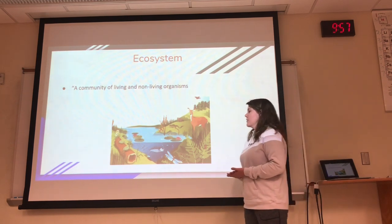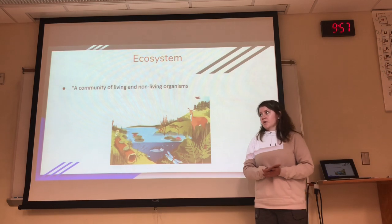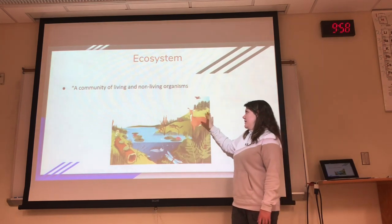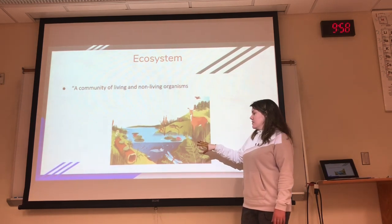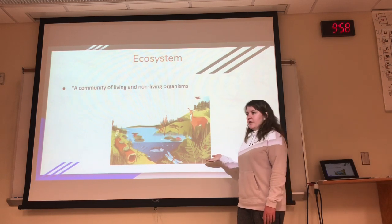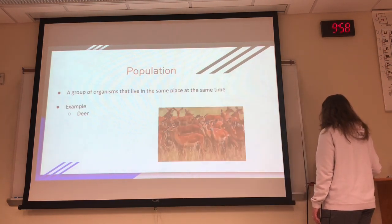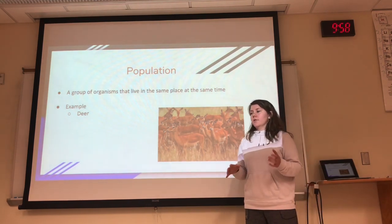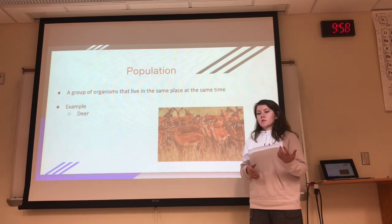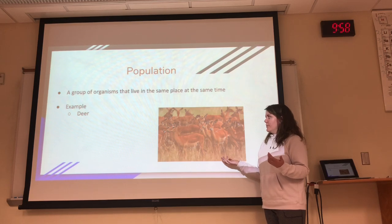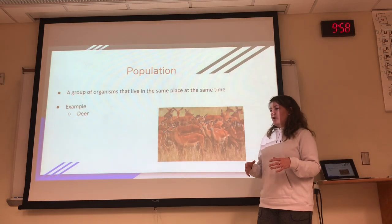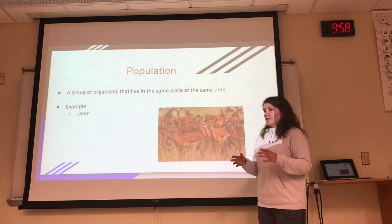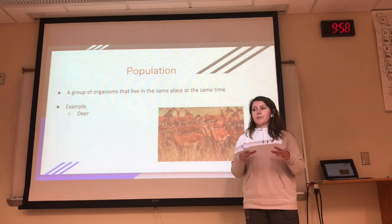An ecosystem is where living and non-living organisms exist together — for example, water, a tree log, deer, birds, and plants all in one area. A population is a group of the same organism living in the same place at the same time. For example, deer that move together form a population; other examples include bears, birds, or fish that stay together.